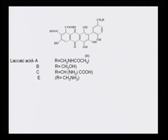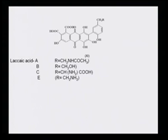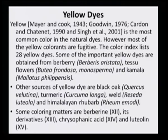If you look at the structure of laccaic acid, the R group in laccaic acid A is represented as CH₂NHCOCH₃; in laccaic acid B, R is CH₂OH; in laccaic acid C, R is CH(NH₂)COOH; and in laccaic acid E, R represents CH₂NH₂. It has a carboxylic acid moiety — that is why it is called an acid — but it also has an amino group which causes good adhesion to the fabric.